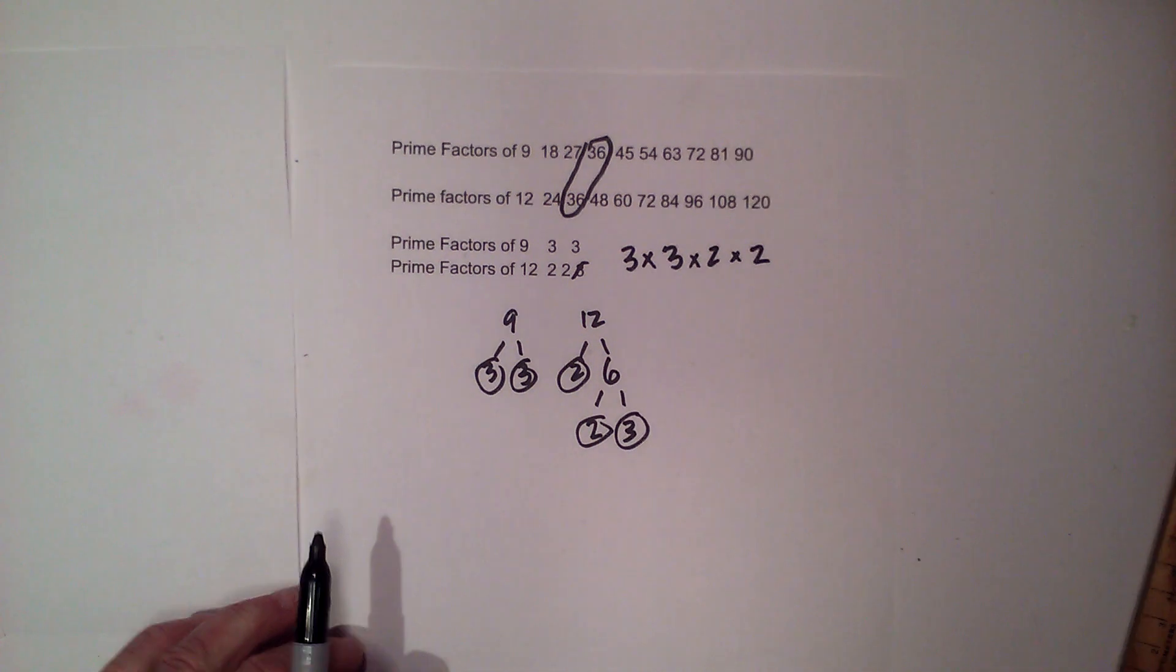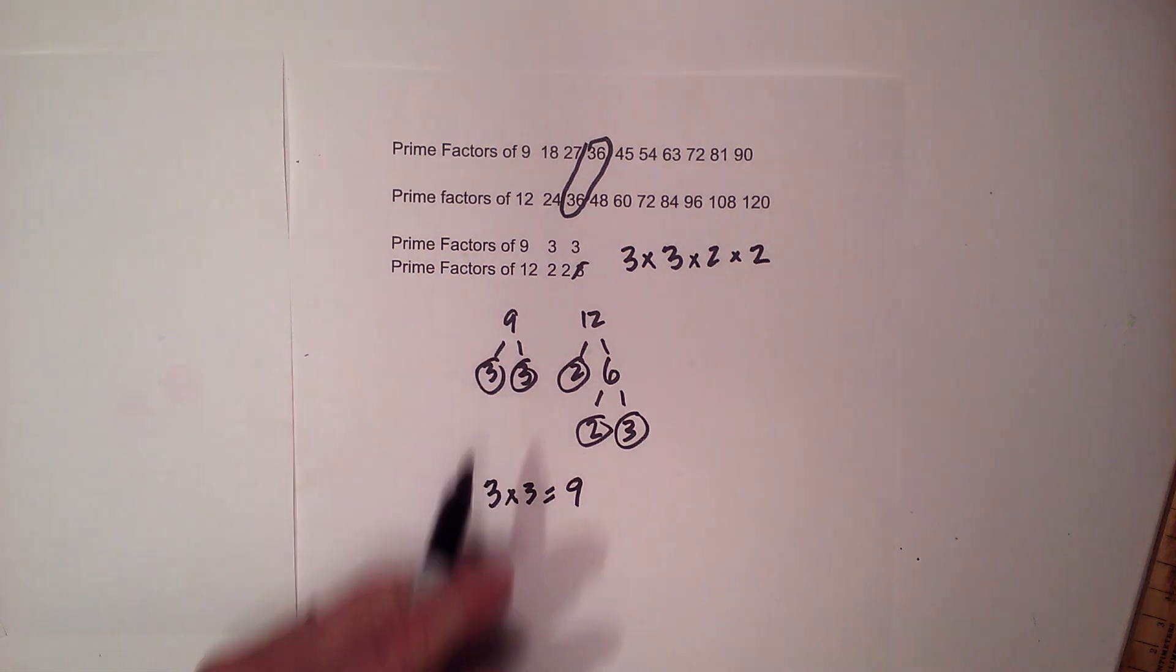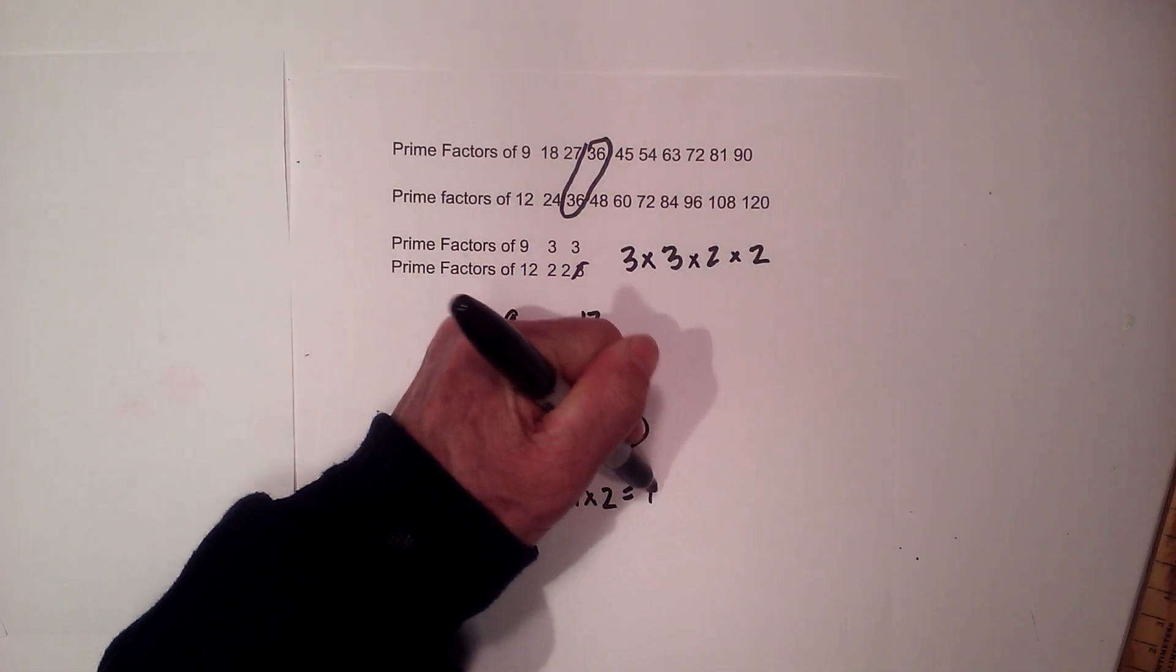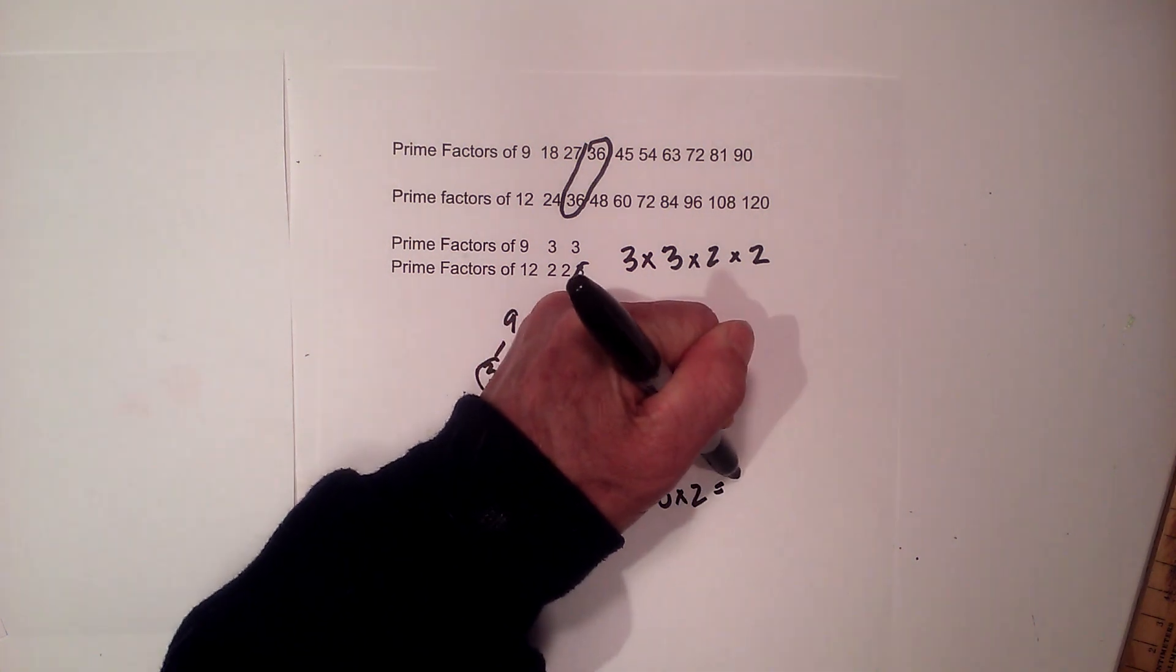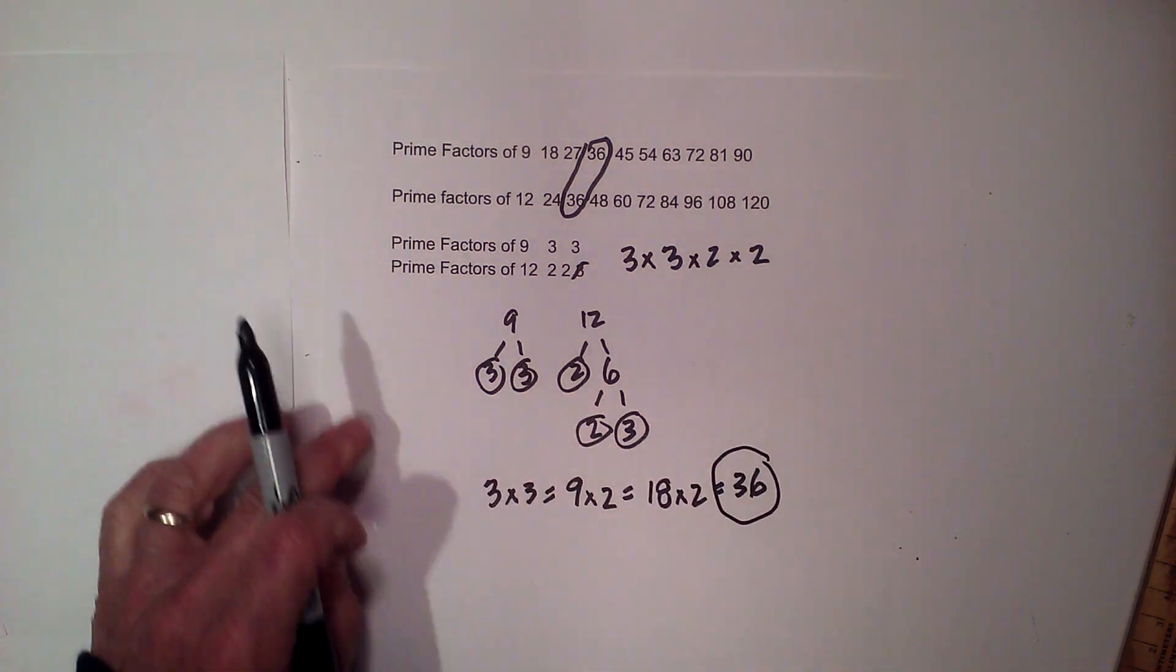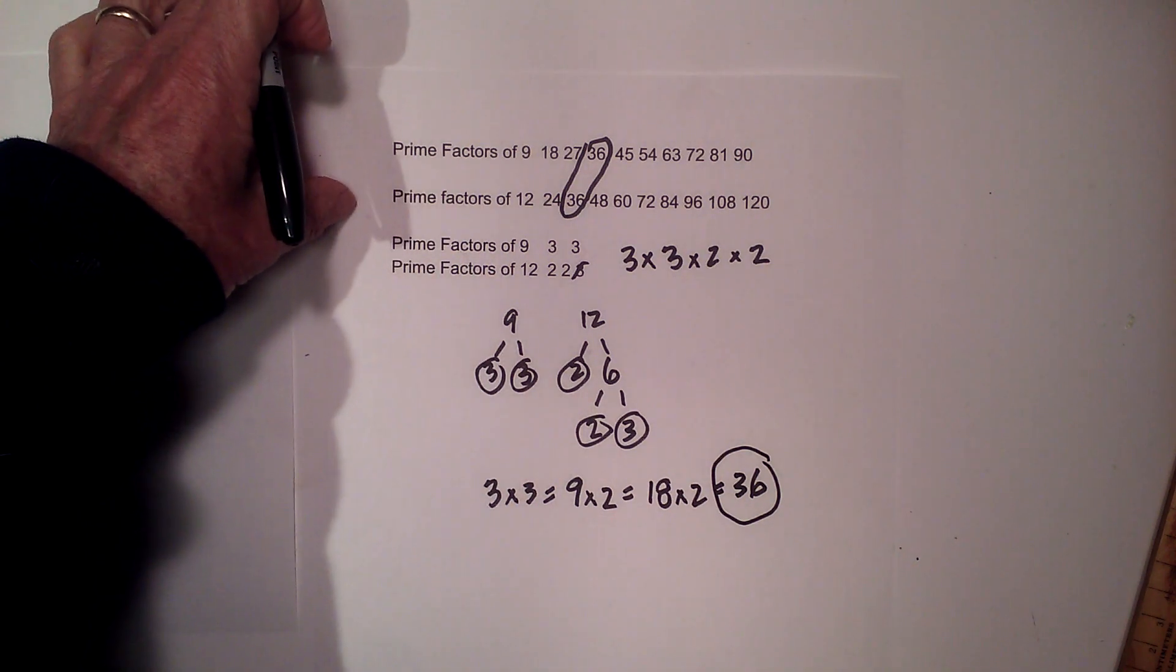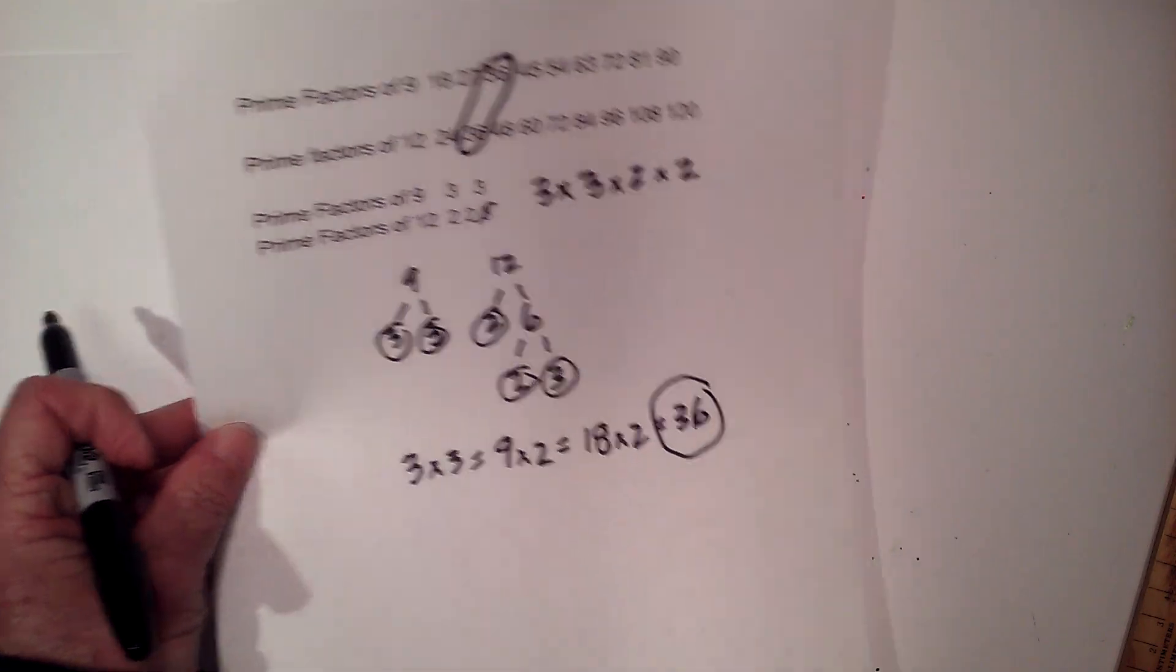I'm going to go down here again: three times three equals nine, nine times two equals eighteen, and eighteen times two equals thirty-six. Again, same number, thirty-six, two different ways. And I wrote prime factors there, that should not be that, it's just multiples of. And finally, let's work one more.